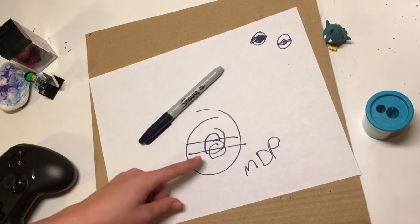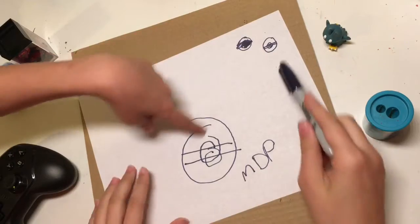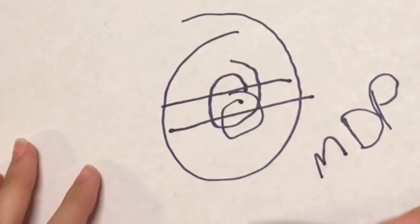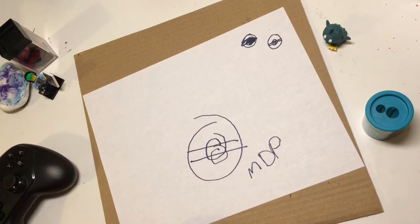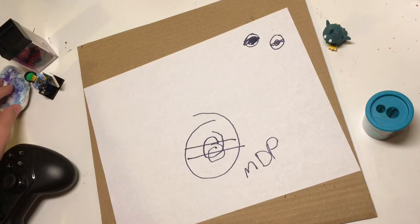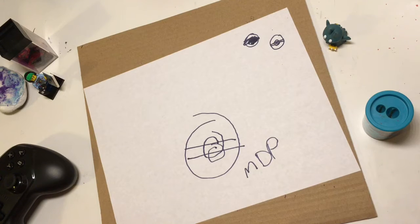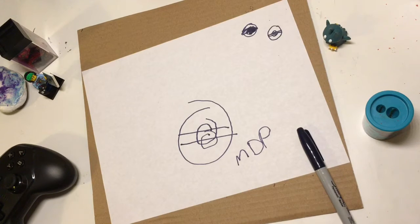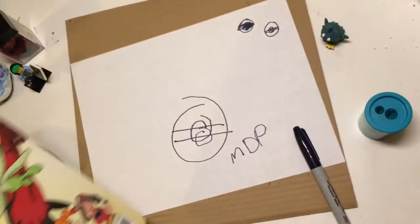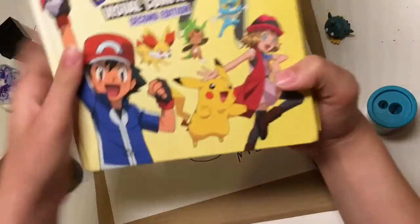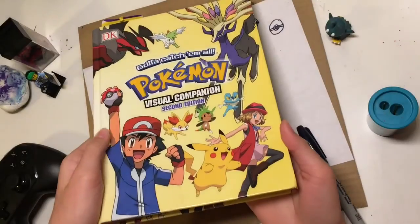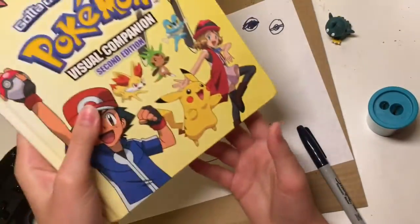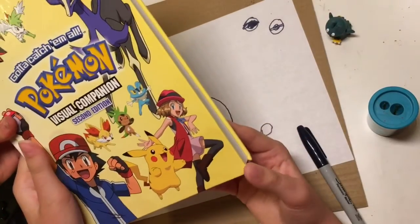Do you know what a master ball looks like? We need to create one. I can draw a reference right here. I actually have a book right here. It's a great book by DK - Pokemon Visual Companion Second Edition X and Y. It does not have Sun and Moon or Sword and Shield but it is great up until then and it's filled with all sorts of information.